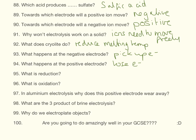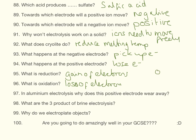What does cryolite do? That reduces the melting temperature of aluminium oxide. What happens at the negative electrode? We are going to pick up electrons, and at the positive electrode we are going to lose electrons.